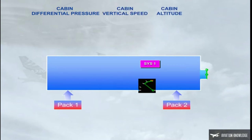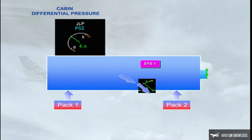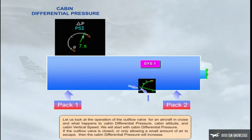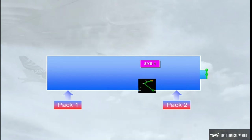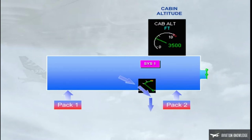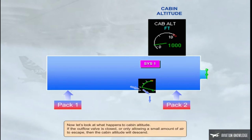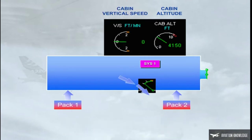We will start with cabin differential pressure. If the outflow valve is closed or only allowing a small amount of air to escape, then the cabin differential pressure will increase. Now let us look at what happens to cabin altitude. If the outflow valve is closed or only allowing a small amount of air to escape, then the cabin altitude will descend. We can also see what the cabin is doing by reference to vertical speed. When the outflow valve closes, the cabin altitude will decrease — negative vertical speed.